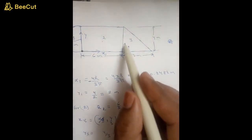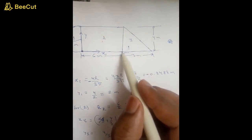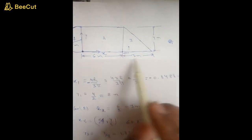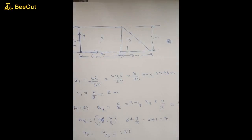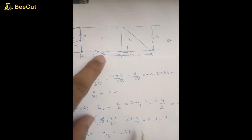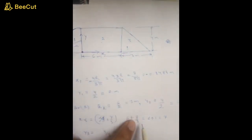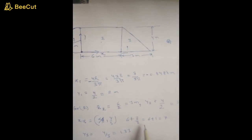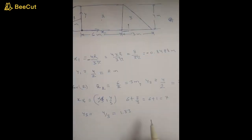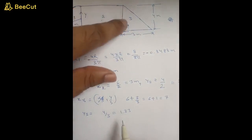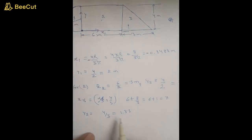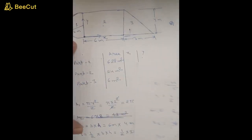For a triangle, the centroid is located at one-third of the base and one-third of the height from the reference point. So x3 equals 6 (the rectangle's width) plus 3 divided by 3, giving 6 plus 1 equals 7 meters. And y3 will be one-third of the height: 4 by 3 equals 1.33 meters.